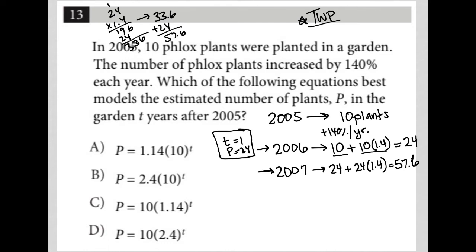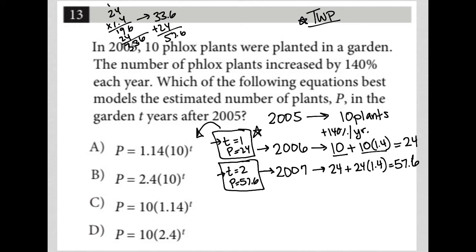And I can use this to plug into my equations to figure out which one's correct. For 2007, when T equals 2, P equals 57.6. It's obvious that plugging in T equals 1 is easier than plugging in T equals 2, especially without a calculator. So I'm going to use this first data point to see if I can find my answer or at least narrow it down.